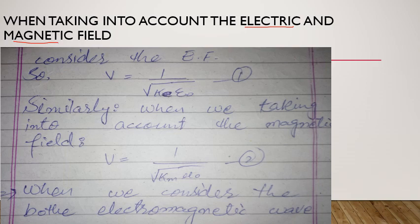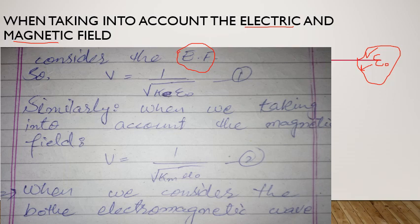جب ہم electric field کو discuss کرتے ہیں تو ایک constant use کرتے ہیں جسے epsilon-not (ε₀) کا نام دیتے ہیں۔ یہ epsilon-not basic classes سے آپ پڑھتے آ رہے ہیں۔ یہ basically permittivity of free space ہے — permittivity کا مطلب ہے اجازت دینا، یعنی free space میں سے electric field lines کتنی pass out ہو سکتی ہیں۔